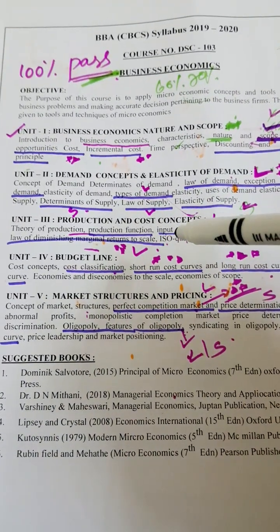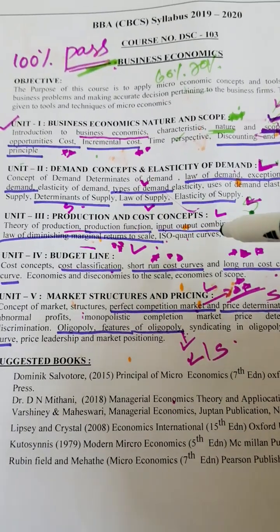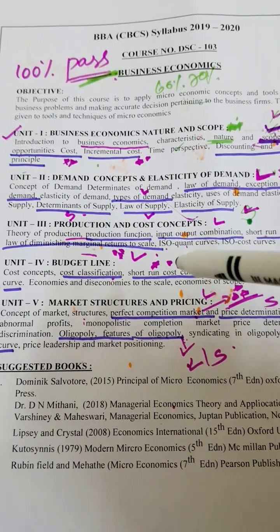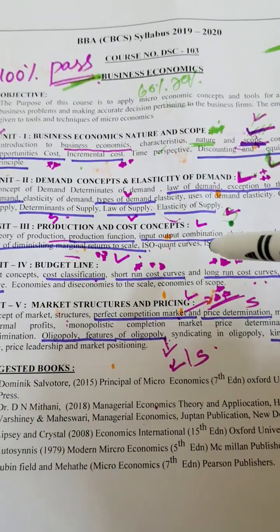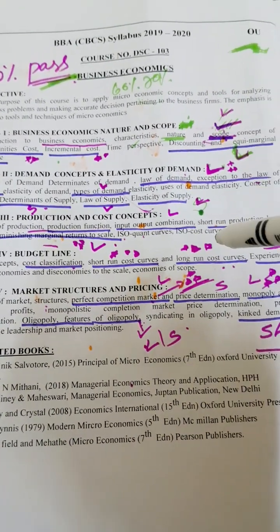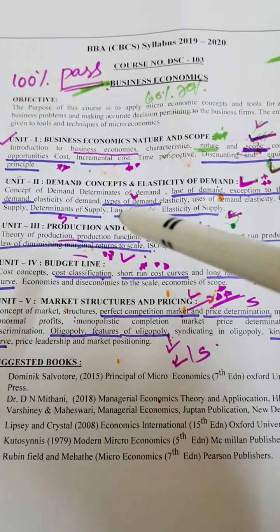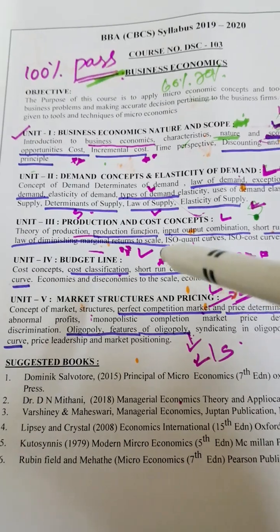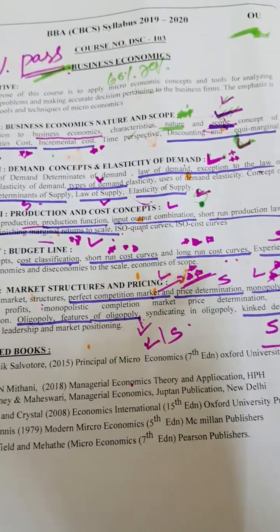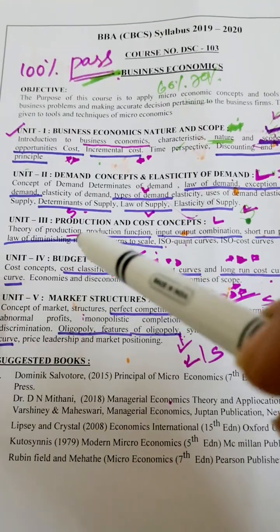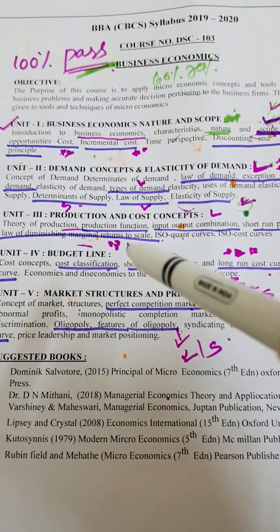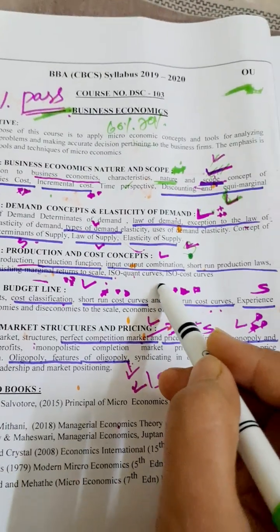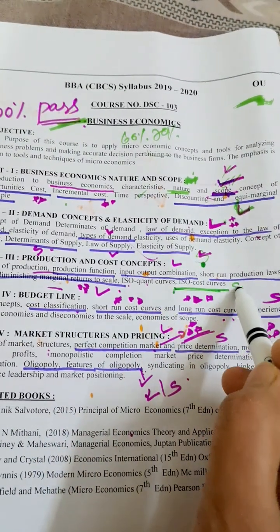Moving to unit three — Production and Cost Concepts. Production function and input-output combination will come for long answers. In this unit you have short-run production laws and law of diminishing marginal returns to scale — learn these for long answers. Iso-cost curve you should learn for short answers.